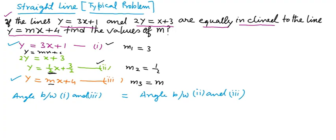Hello students. In this video we will see a straight line problem. The problem is: if the lines y equals 3x plus 1 and 2y equals x plus 3 are equally inclined to the line y equals mx plus 4, find the values of m.